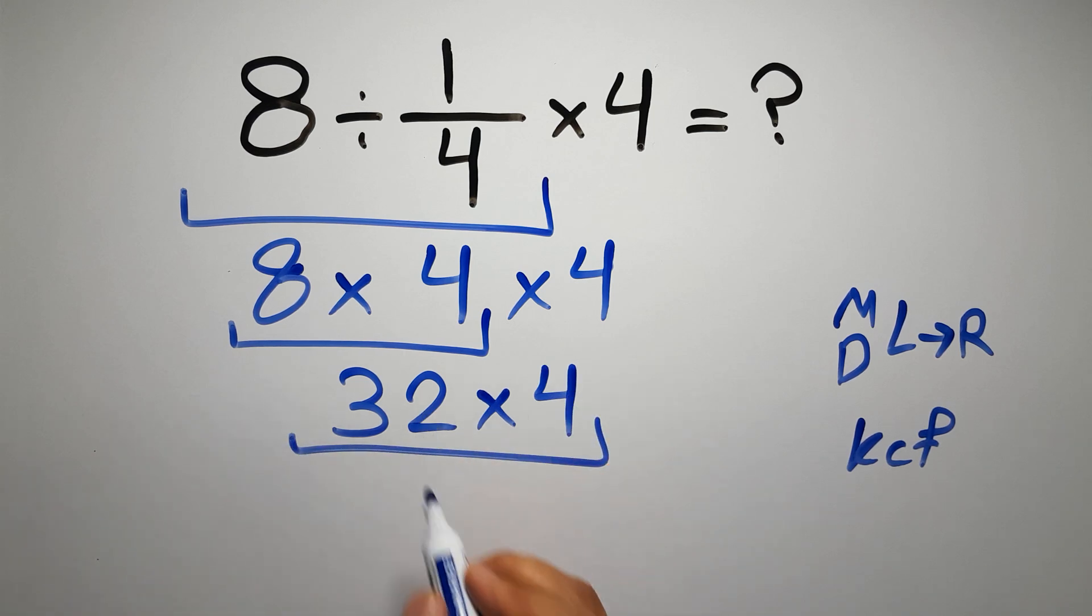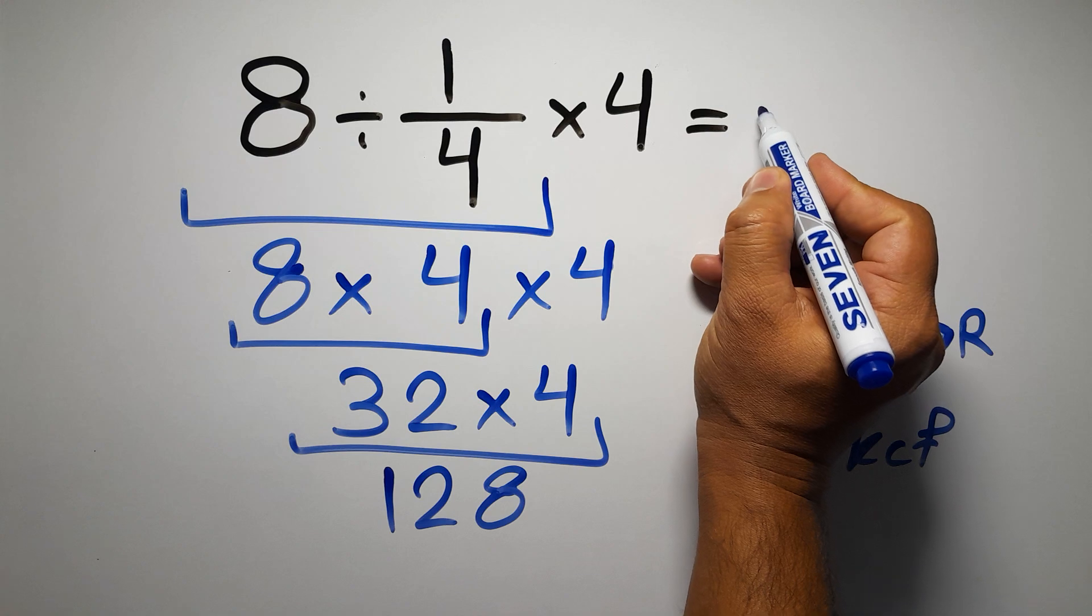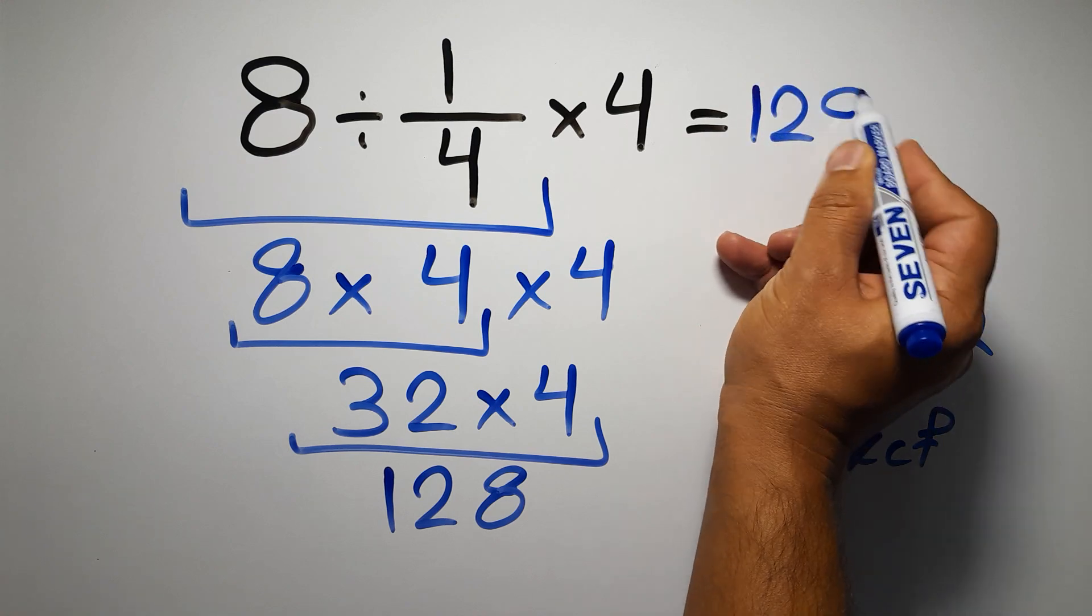4 times 2 gives us 8, and 4 times 3 is just 12, so we have 128. And this is our final answer to this problem, the correct answer is 128.